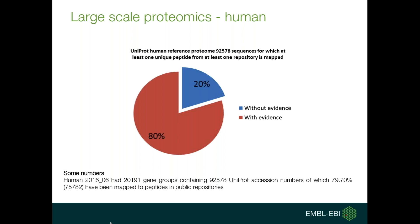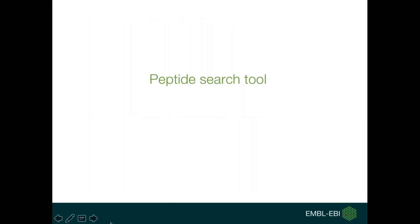Of course, this kind of proteomics dataset is not limited to human. As you can see on the following page, there are many more datasets which include the usual range of model organisms, starting from C. elegans all the way down to yeast, and this is a set that is set to expand over time as we add new datasets to UniProt.